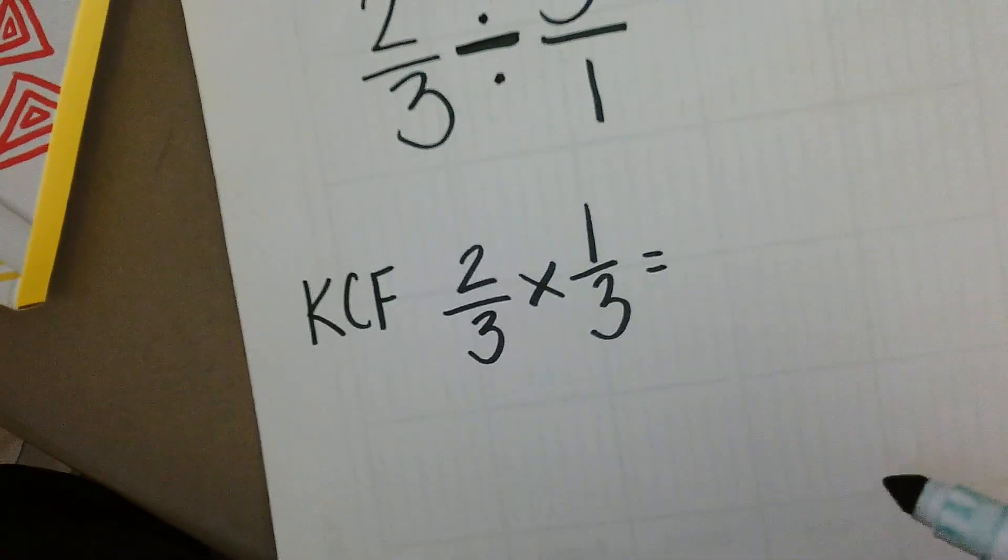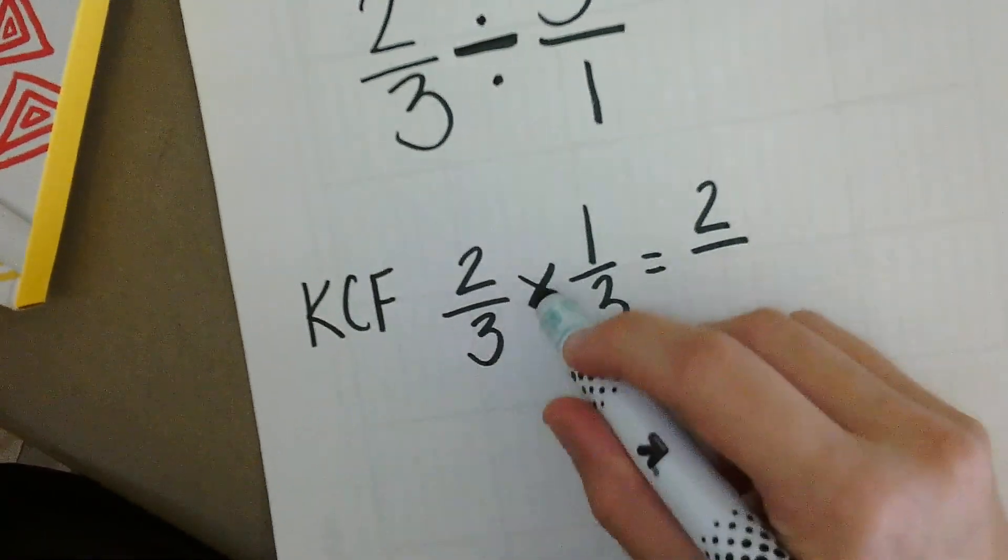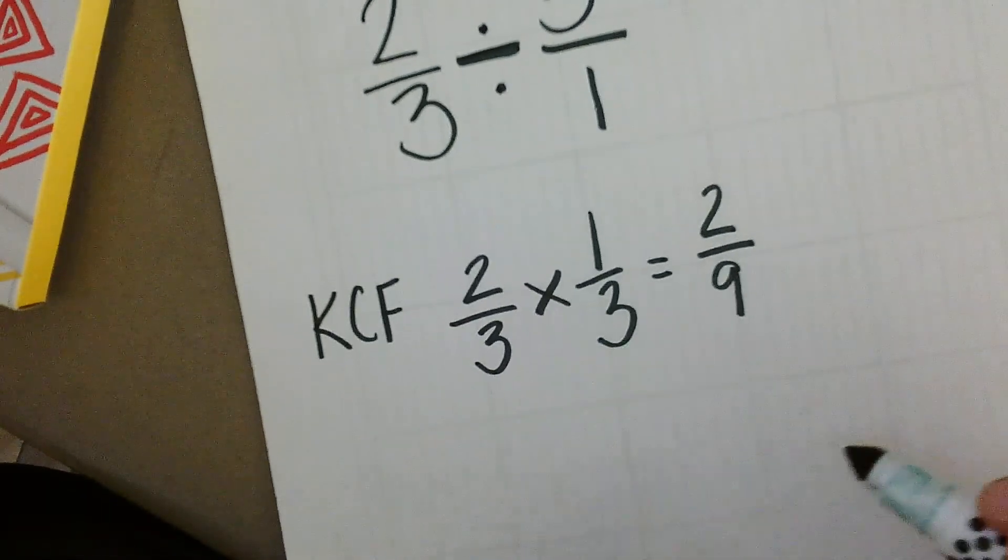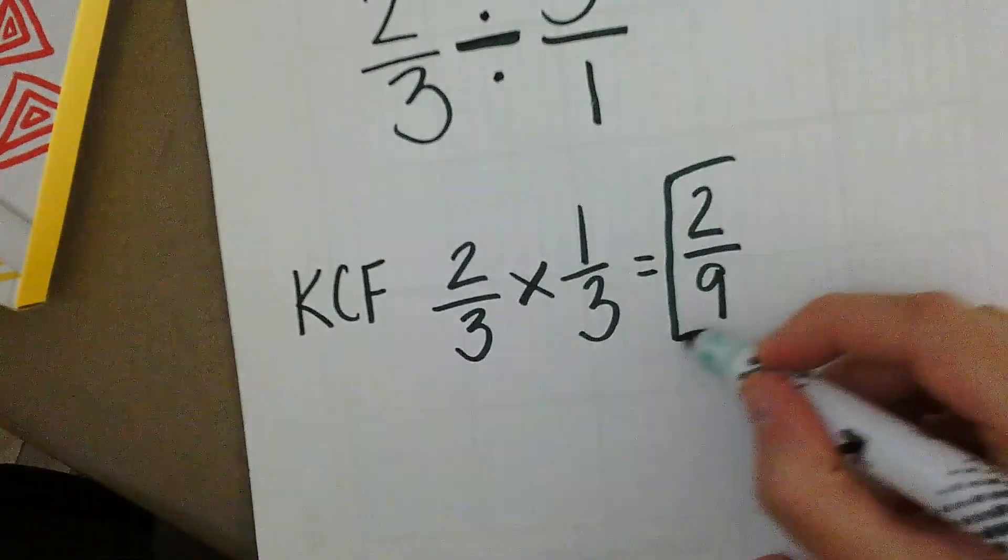This step, you're going to multiply straight across. Two times one is two. Three times three is nine. You're not able to simplify your answer, so this is your answer.